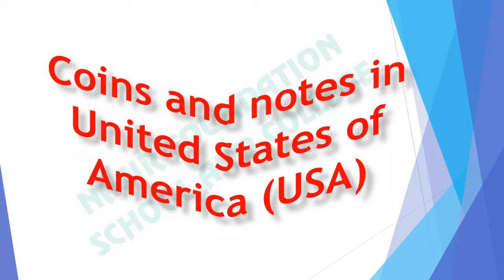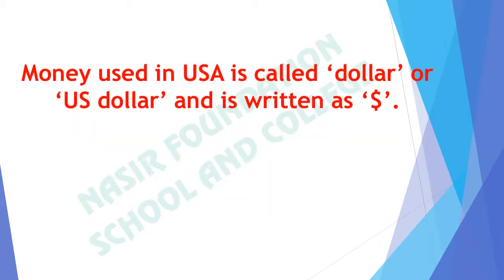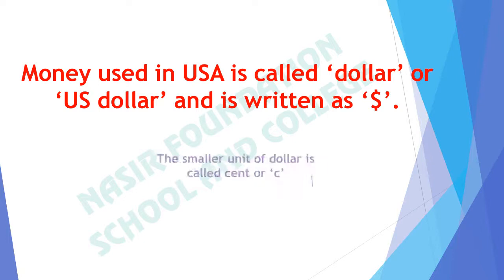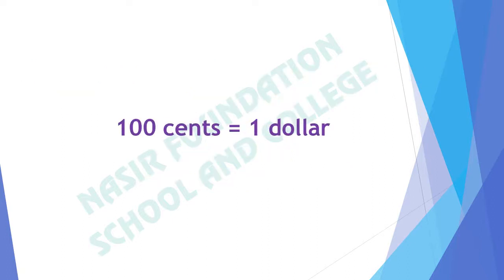Now, coins and notes in the United States of America, or USA. Money used in USA is called dollar or US dollar, and it is written with the $ symbol. The smaller unit of dollar is called cent, denoted by the ¢ symbol. 100 cents make 1 dollar, just as 100 Paisas make 1 rupee.